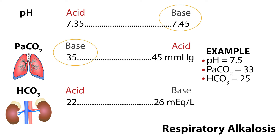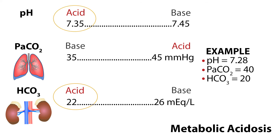In our next example, the pH is 7.5, so it is basic. The PaCO2 is 33, which is also basic. The HCO3 is 25, which is within normal range. In this case, there is excess CO2 being excreted, possibly caused by hyperventilation or fever. The acid-base imbalance is again caused by the respiratory system, but with an alkalotic pH, meaning it would be respiratory alkalosis.